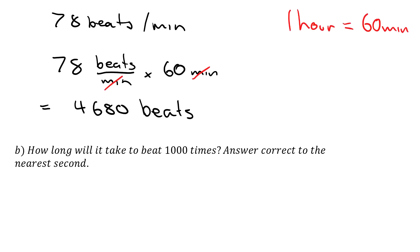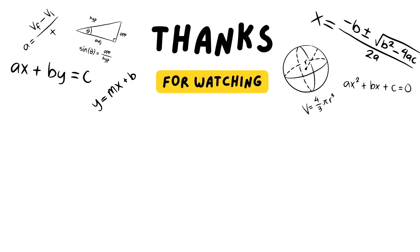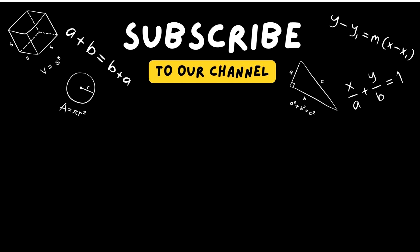So how long will it take to beat 1,000 times? So again, let's write down our 78 beats per minute. Except this time we have 1,000 beats. So that actually is going to be 1,000 beats divided by 78. So those would cross out, and we get, to correct to the nearest second, this comes out as 12.82 minutes. So that's 12 minutes, and we have a little bit left over. There's 0.82 minutes left over. We know there's 60 seconds in a minute, so we're going to times that by 60. So over here, 12 minutes and 49 seconds, or going to 12 minutes and 54 seconds.